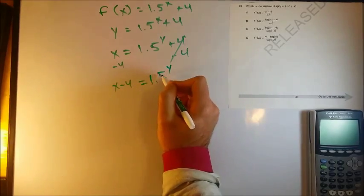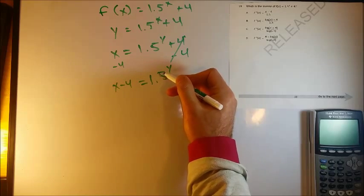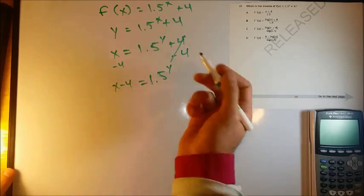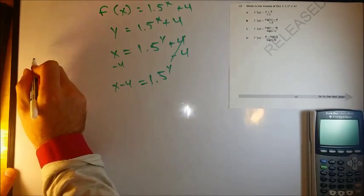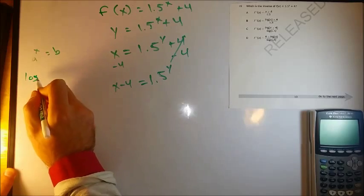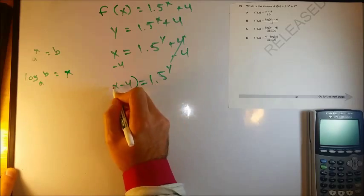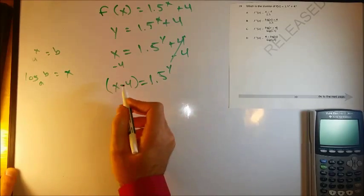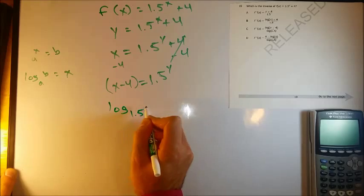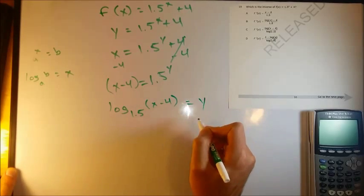Now I'm in some trouble because I've got my y in the exponent spot. So what I want to do then is if I've got the variable I want in my exponent, I just want to convert it then to logarithmic form. If we have a to the x equals b, this means the same thing as log base a of b is equal to x. So likewise, this will become log base 1.5 of x minus 4 is equal to the exponent y.